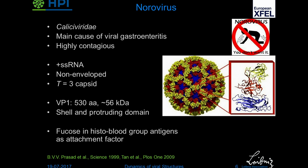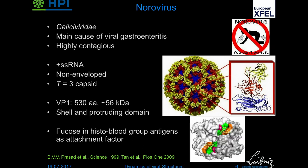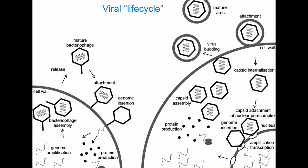The capsid protein is fairly large at a bit more than 50 kilodaltons. It comes in a shell domain, which on its own is able to form the capsid, and it has a protruding domain which is responsible for cell attachment and reinforcement of the capsid. If you just take this P domain you can study binding to the natural ligands, which are glycans on the cell surface. For human viruses, the minimum attachment factor is found in the blood group antigens. Until very recently it was thought that each monomer had a single binding site, so you would get two binding sites per dimer — and that's what we started out with, thinking this is a nice system to set up our methods.